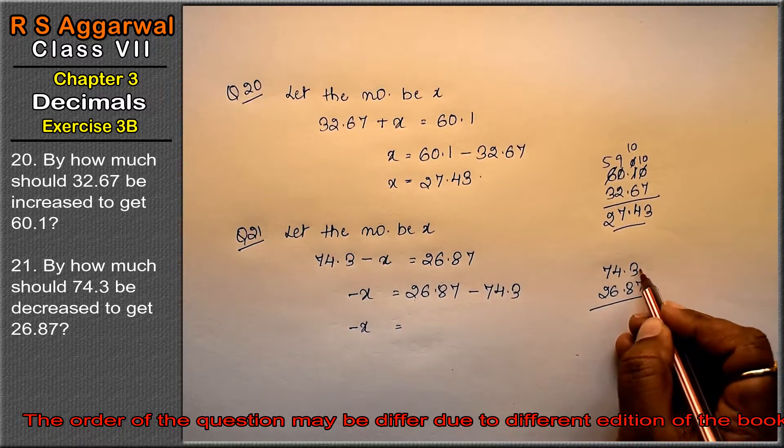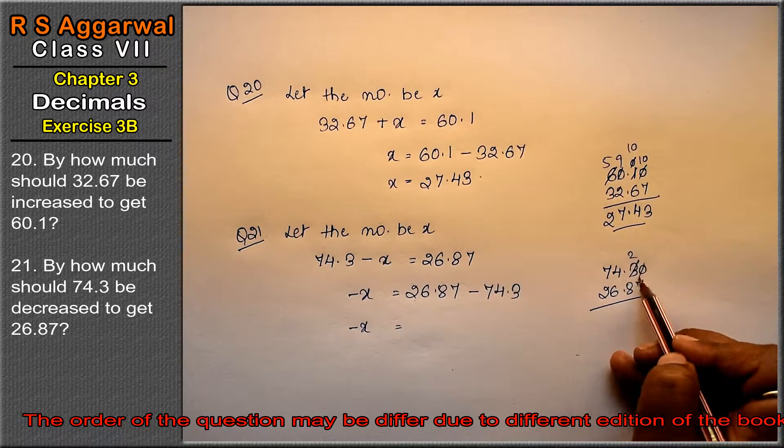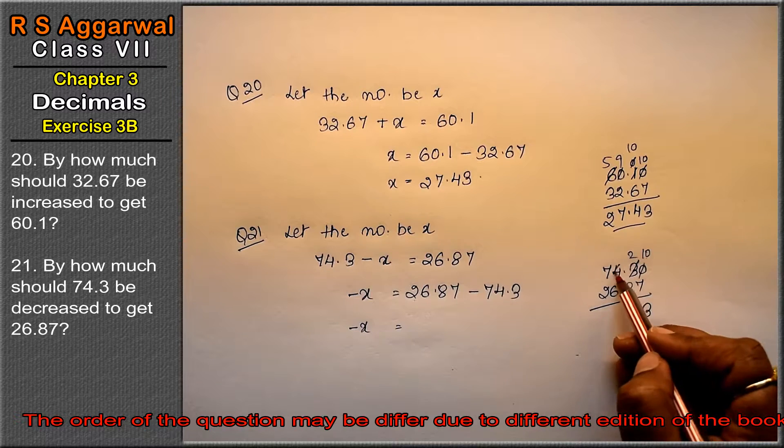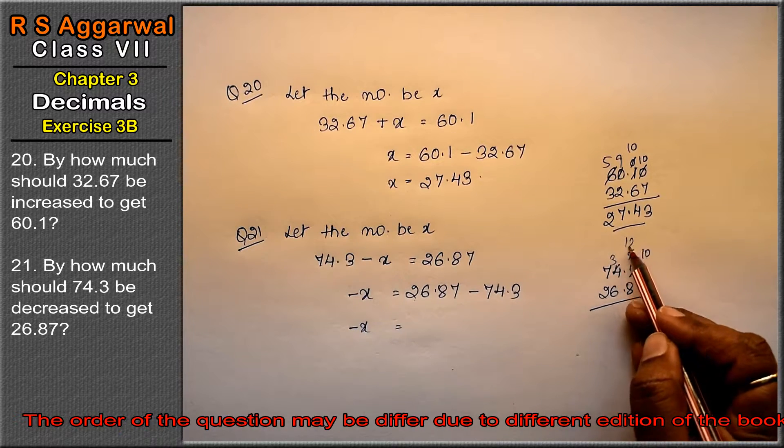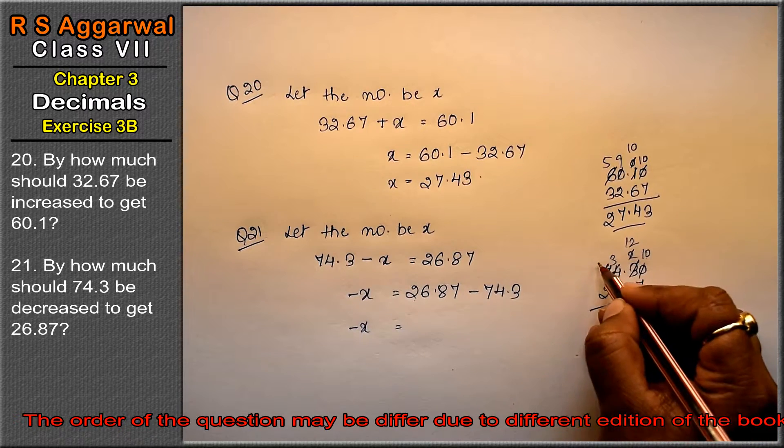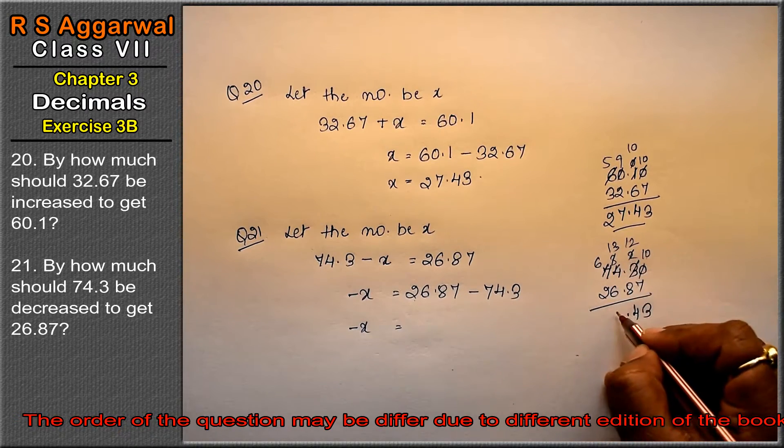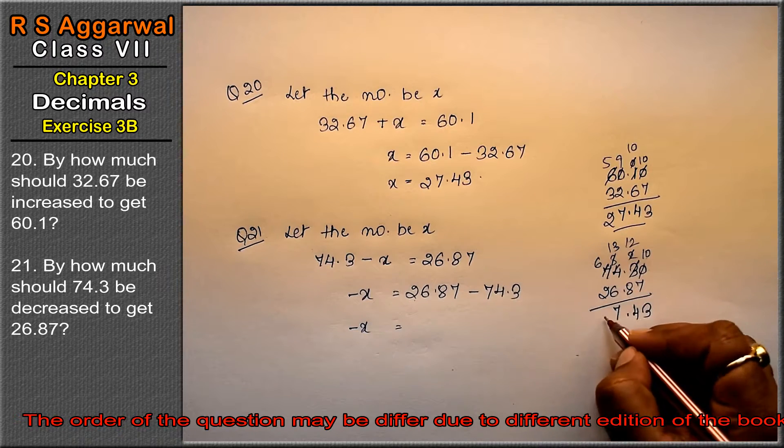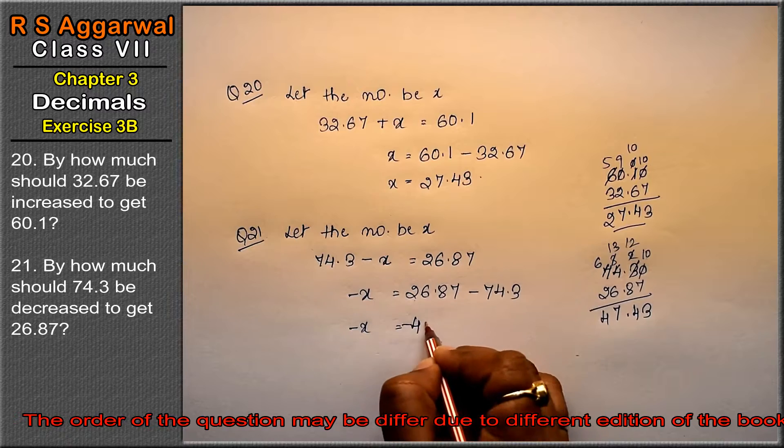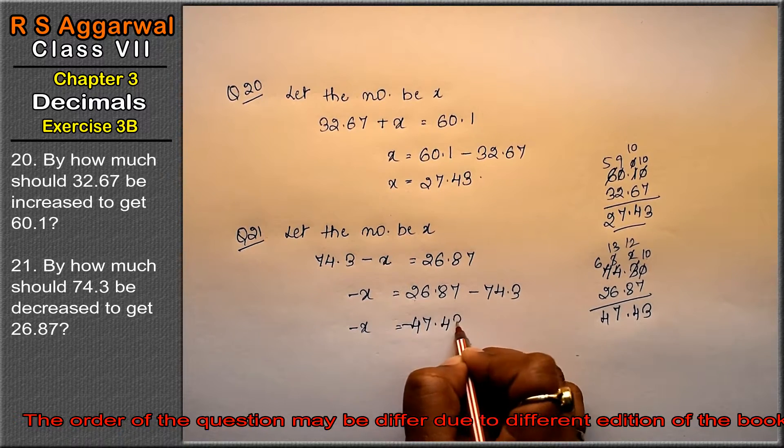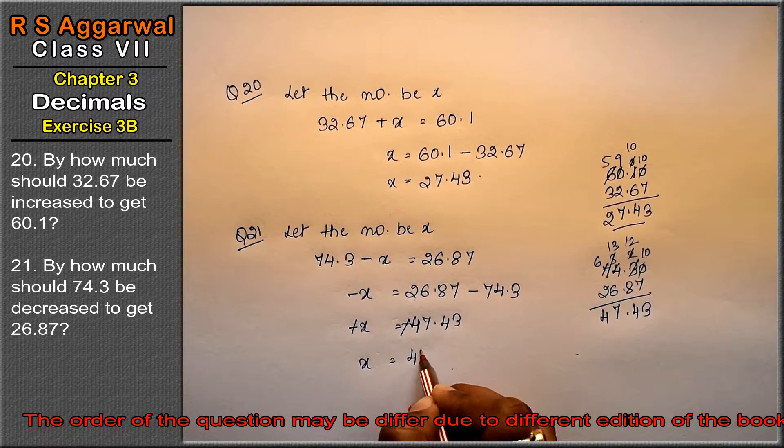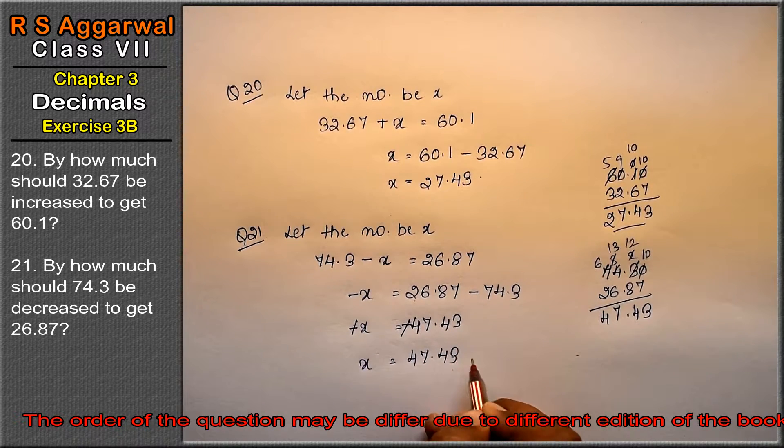Now this is nothing, so 0 came. It has carried 1. 10 minus 7 is 3. Now this 3 has carried 1. 12 minus 8 is 4. Now this 6 has carried 1. 13 minus 6 is 7, and 6 minus 2 is 4. That means minus 47.43 came. Now minus minus on both sides cancelled, so x came 47.43. That is the answer.